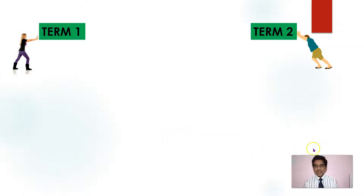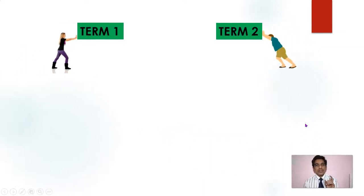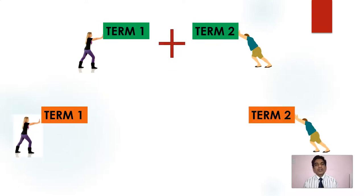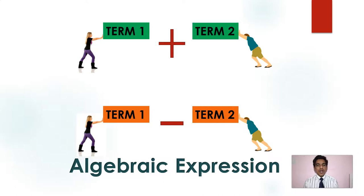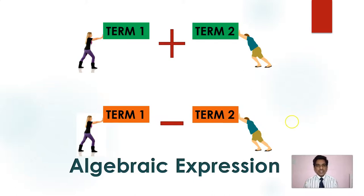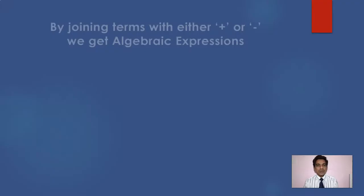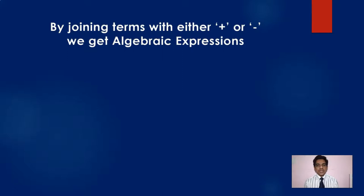Now we will move on to the next topic. When you combine two terms either with plus or with minus, you get an algebraic expression. By joining terms with either plus or minus — not just two terms, but more than two — we get algebraic expressions.